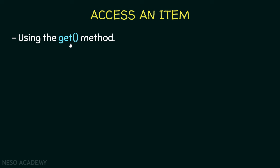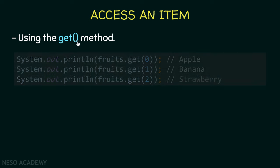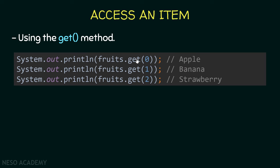To access elements we use the get() method. With arrays we used brackets, but with ArrayList we use get(). Suppose our 'fruits' ArrayList contains apple, banana, and strawberry. Calling fruits.get(0) prints 'apple', fruits.get(1) prints 'banana', and fruits.get(2) prints 'strawberry'. Elements in an ArrayList are also indexed starting from zero.